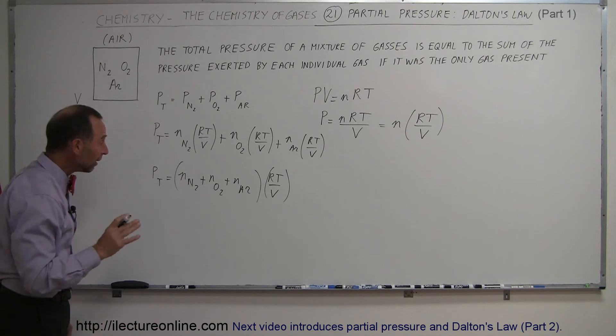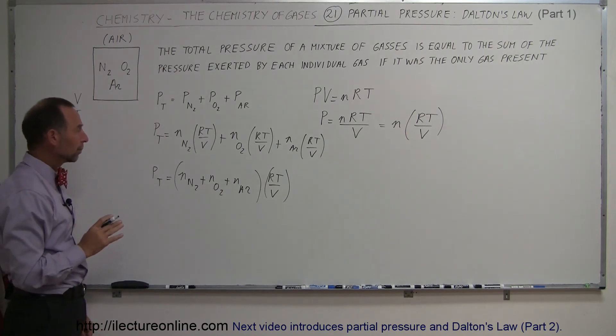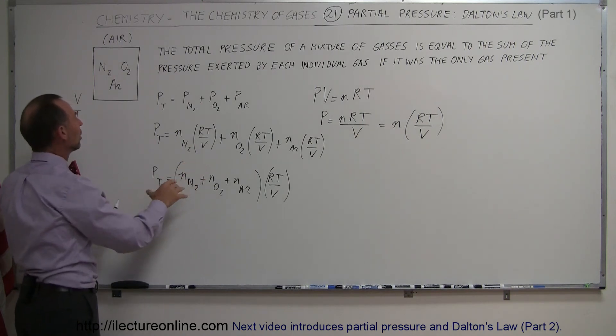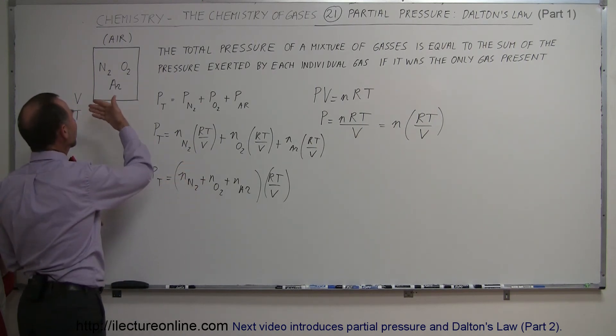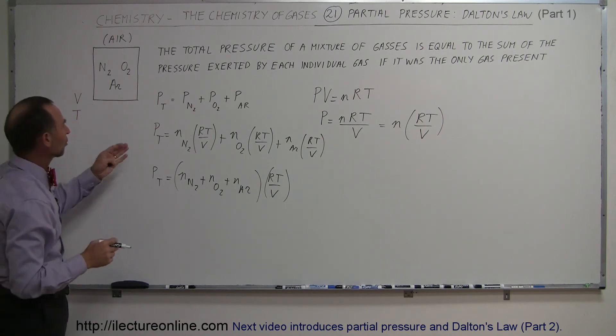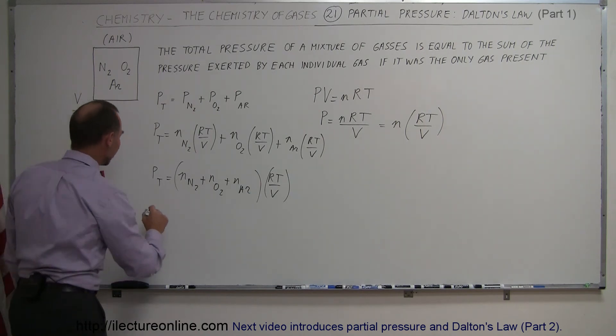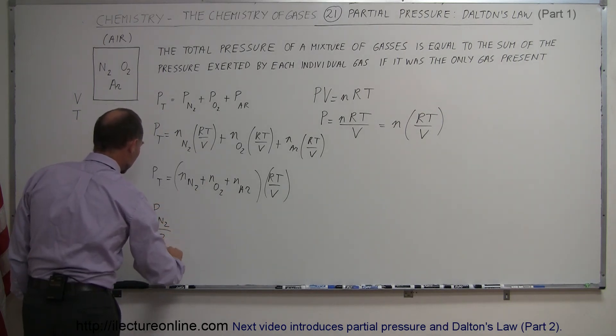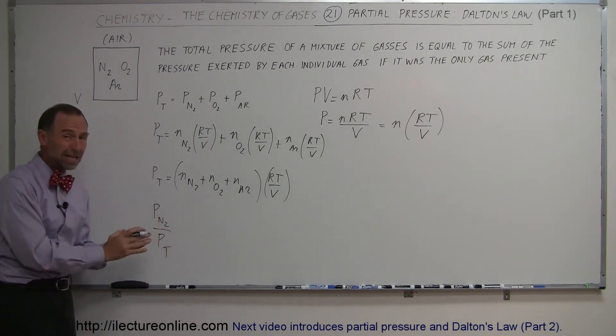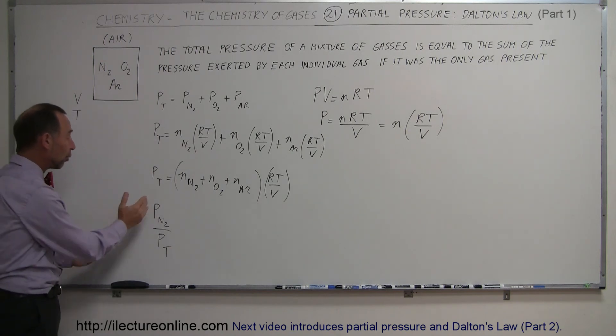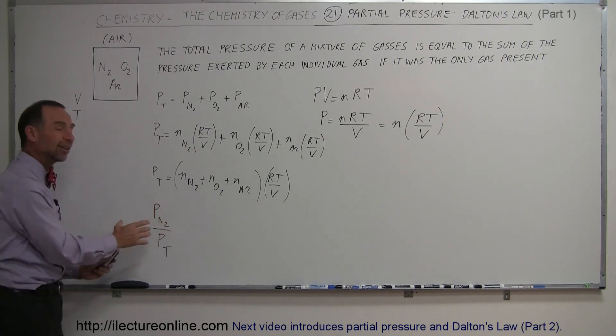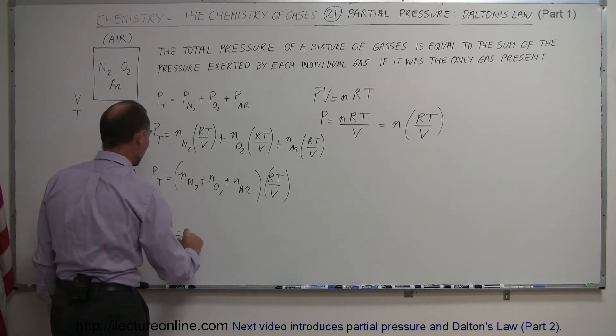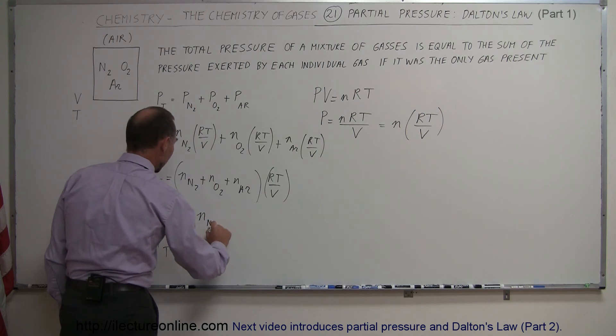Now, if I now divide, what I'll do next is I now take this equation and divide it into the partial pressure of any one of those gases. Let's say I want to calculate the partial pressure of nitrogen in the air, I can then say the ratio of the pressure of nitrogen divided by the total pressure, and this ratio really means the partial pressure, the portion of the total pressure that belongs or that is caused by the nitrogen gas.